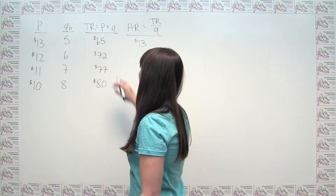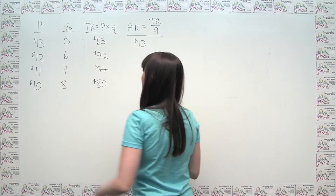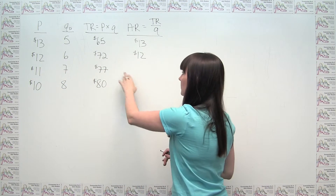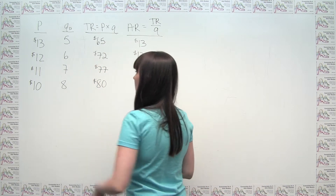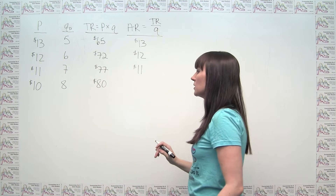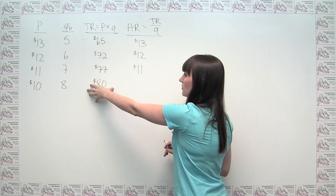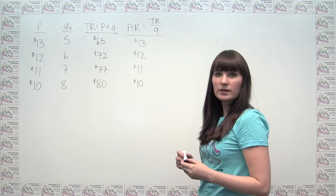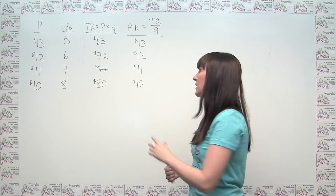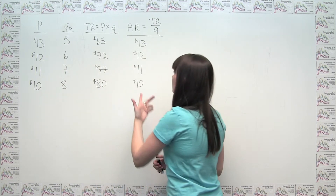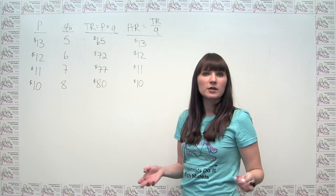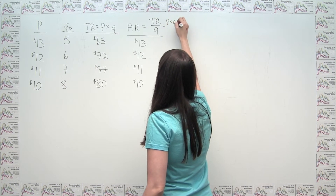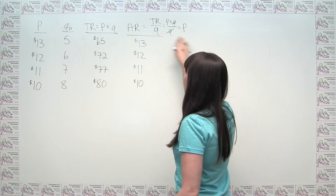At the next production level, average revenue is $72 divided by 6, or $12. At the next level, it's $77 divided by 7, or $11. And at the last level, $80 divided by 8, or $10. You might notice these numbers look similar to our price column — and that's not surprising, because if we're selling all output at the same price, average revenue equals total revenue over quantity, and since total revenue is price times quantity, those cancel out and average revenue equals price.